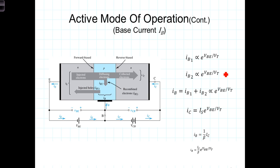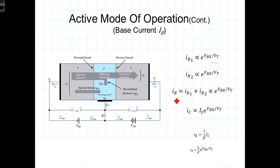Both components are functions of the base-to-emitter voltage. I_B1, the diffusion current, is just the diode equation from Chapter 3. I_B2 is a function of the electron concentration, which is itself a function of V_BE. So both components are exponentially related to V_BE, and the total base current I_B equals the sum of those two components. The important point is that the base current is exponentially dependent upon V_BE.